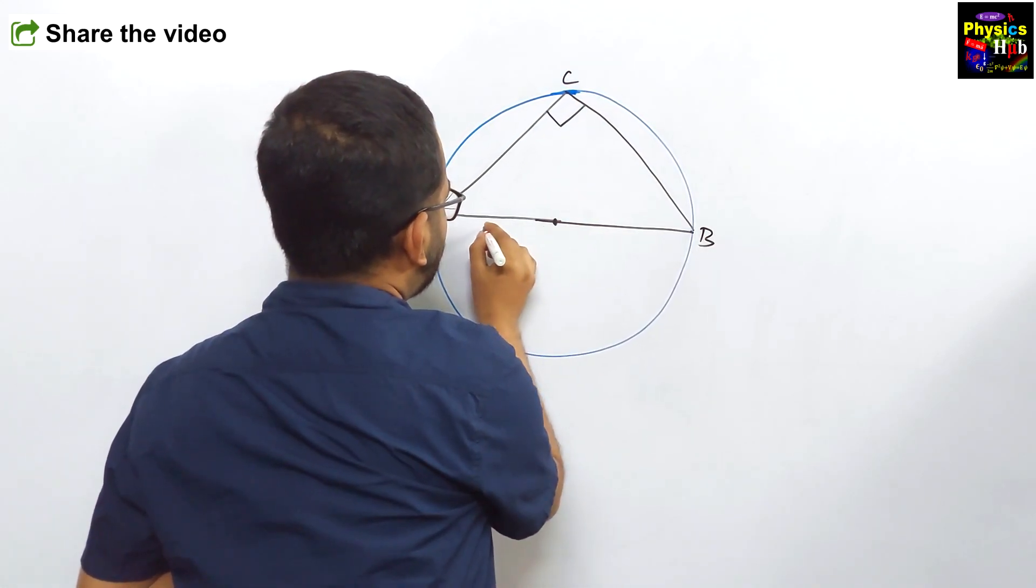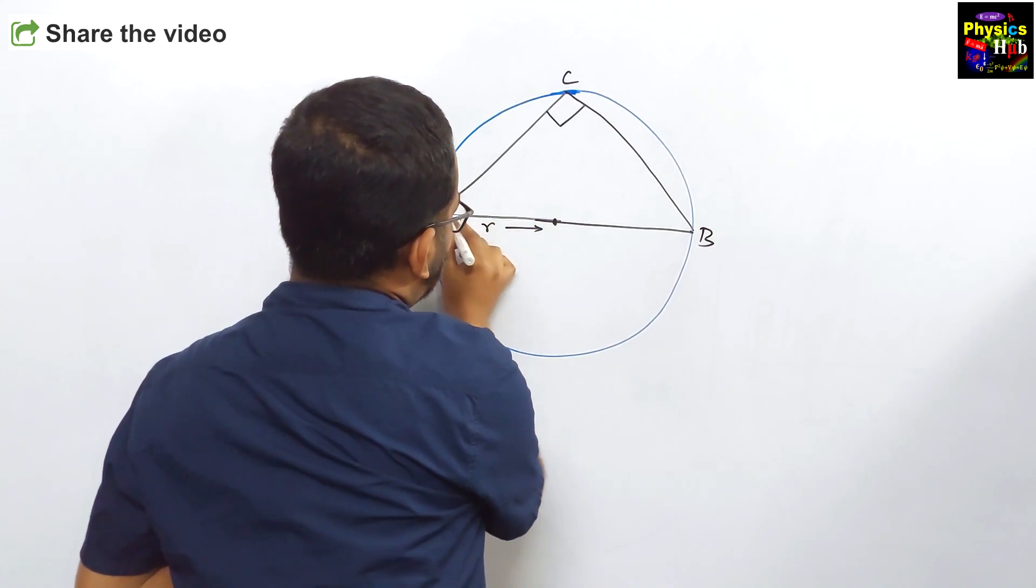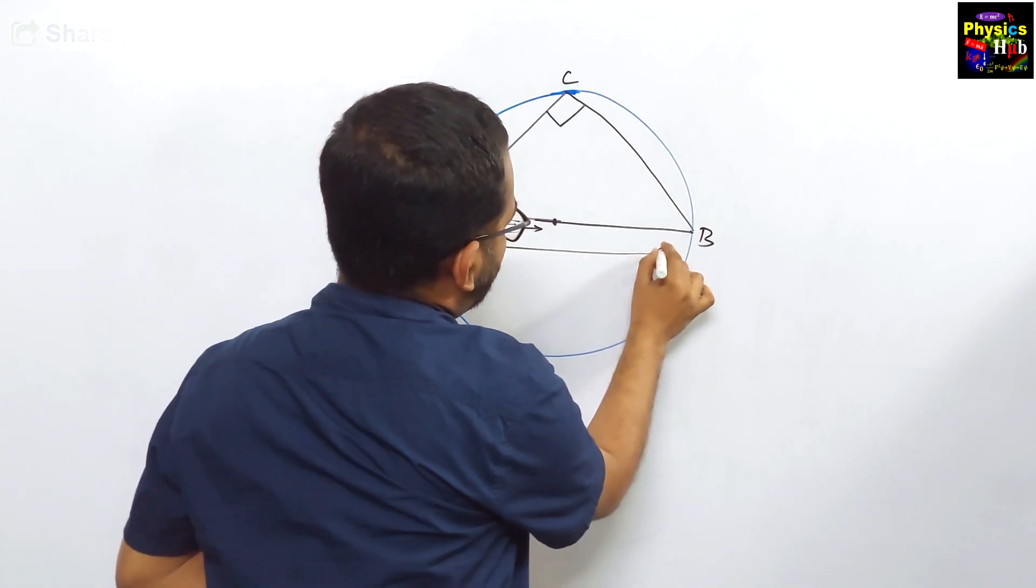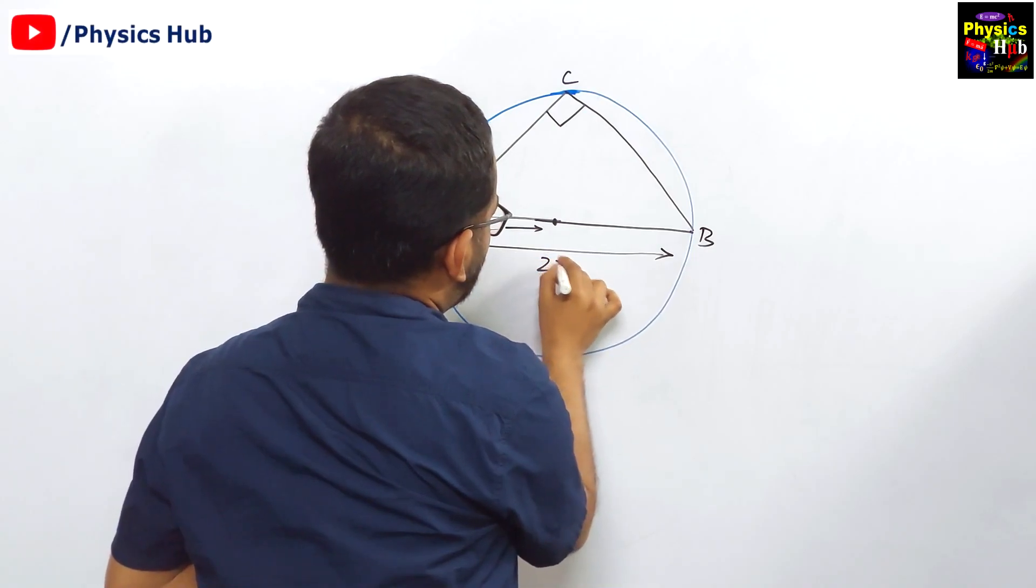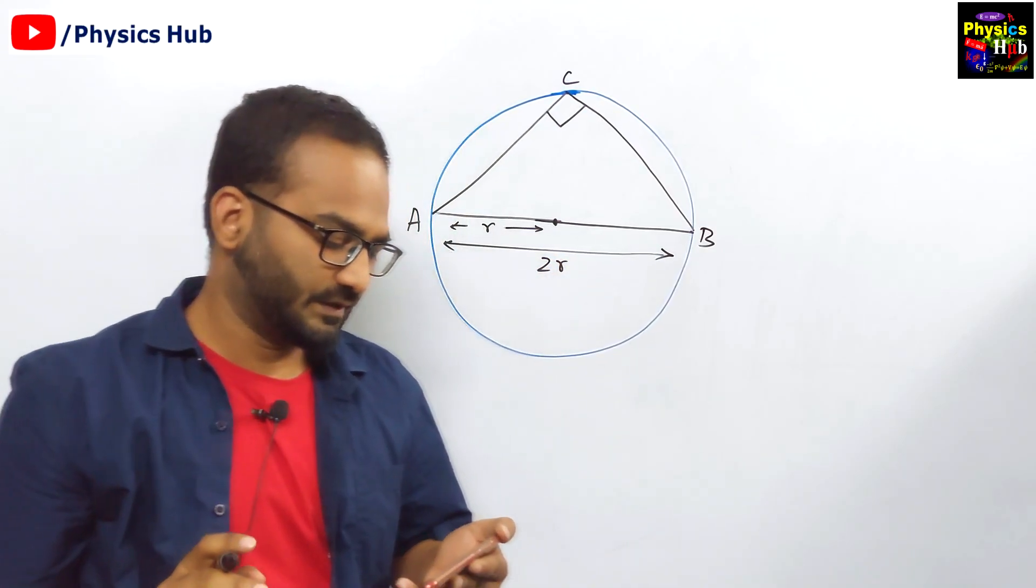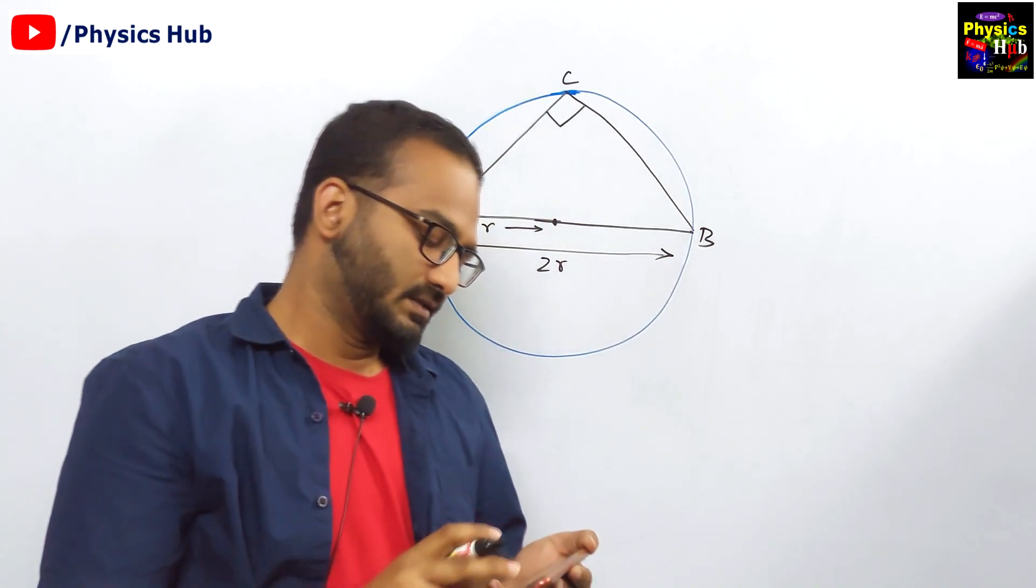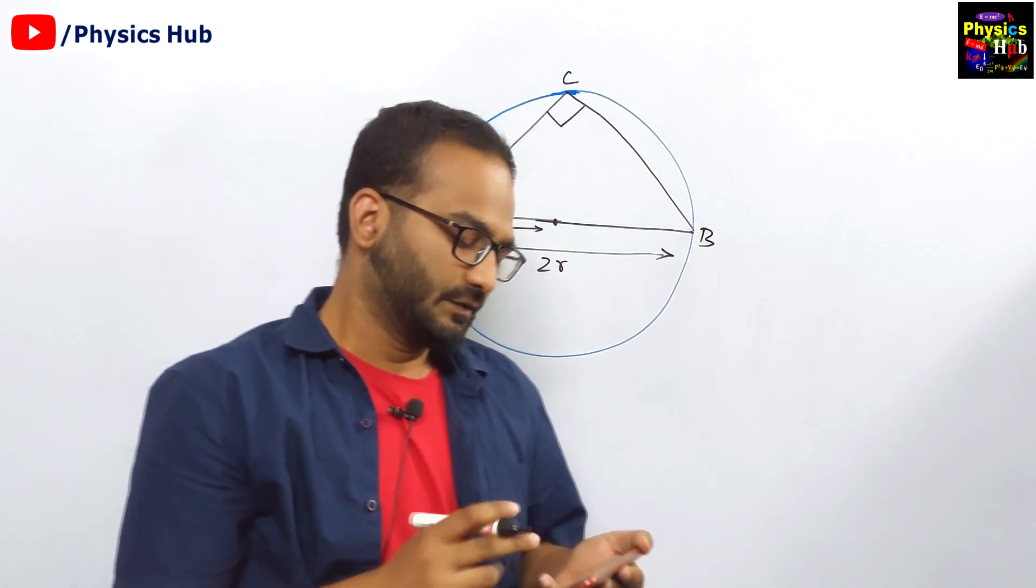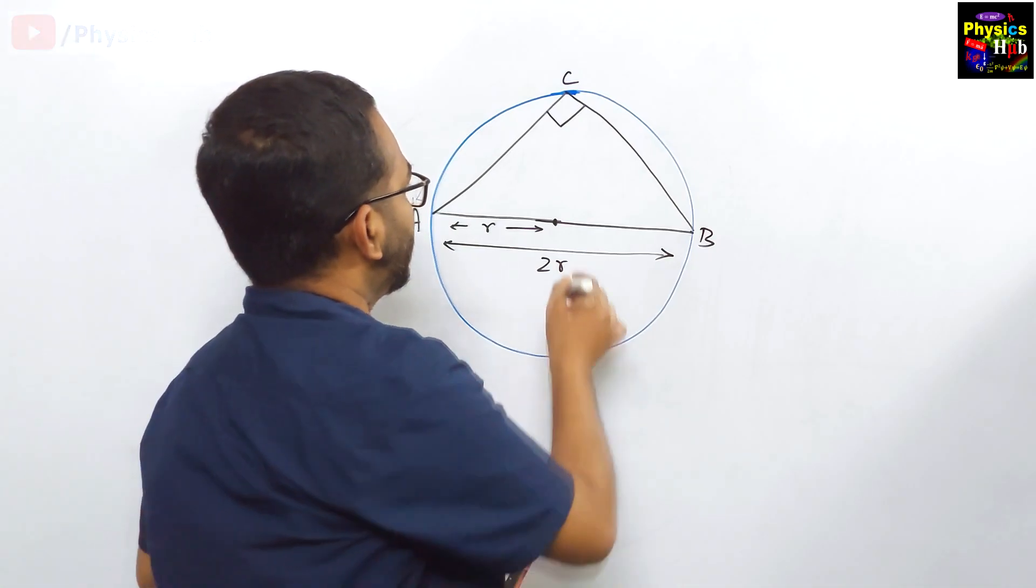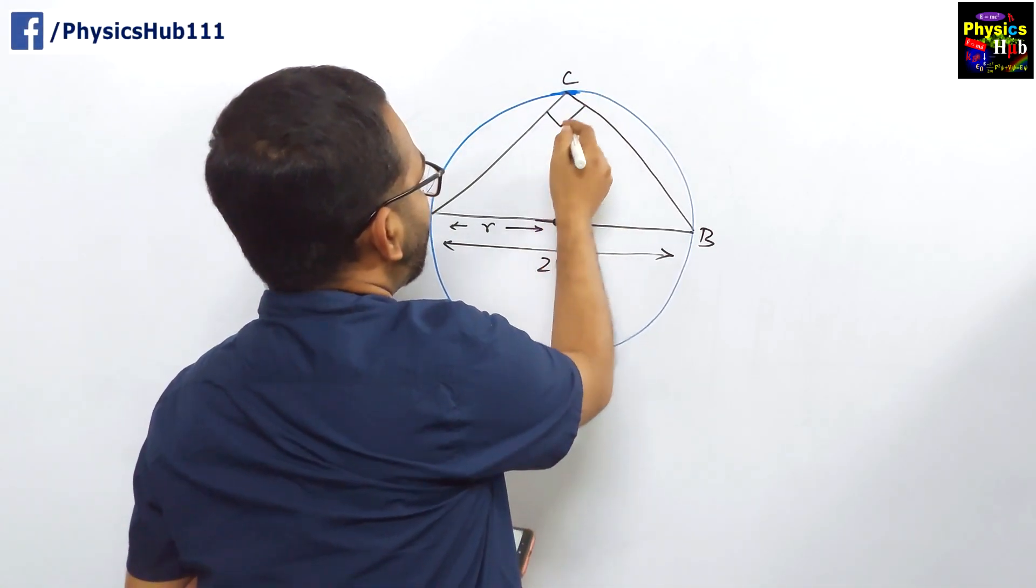And let us say the radius is r. So the diameter of this circle will be 2r. No confusion in this. You have to calculate the maximum area of the right angled triangle inscribed in a circle of radius r. So basically, you have to calculate this area of this triangle.